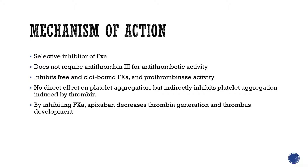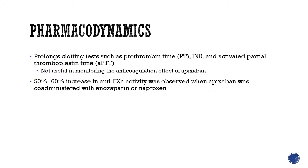Apixaban is a selective inhibitor of factor Xa. It does not require antithrombin III for antithrombotic activity. It inhibits both free and clot-bound factor Xa and prothrombin activity. It has no direct effect on platelet aggregation, but indirectly inhibits platelet aggregation induced by thrombin. By inhibiting factor Xa, apixaban decreases thrombin generation and thrombus development. As a result, apixaban prolongs clotting tests such as prothrombin time, INR, and activated partial thromboplastin time.